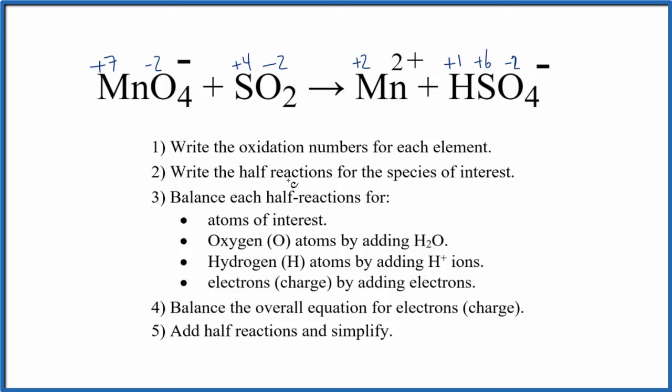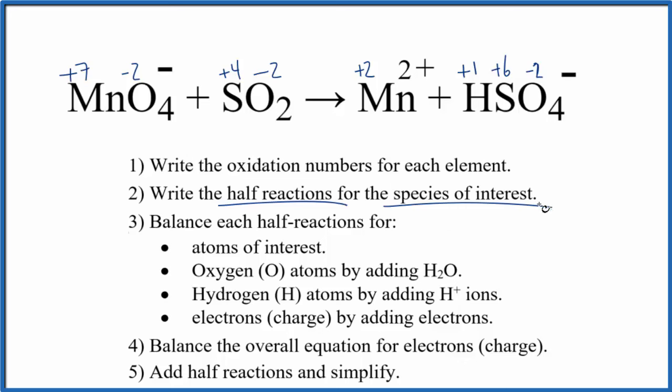Once we've written the oxidation numbers, we can write the half reactions for each species of interest. These are the ones that have changed. That'll look like this.